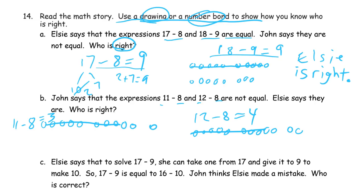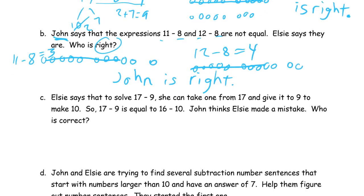So they are not equal. And that means John — John says they are not equal — so John is right. And John's name is right there, and there's the word right. John is right. That's it — everything you need. Got a picture, got number sentences, got your answer statement, and the pictures are labeled.